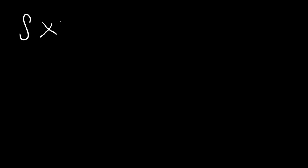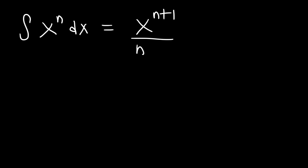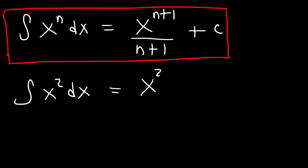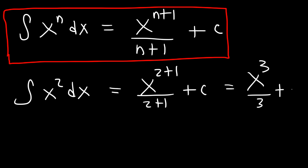Another rule you need to be familiar with is the power rule. Let me give you some examples. If we wish to find the antiderivative of x squared dx, this is going to be x raised to the 2 plus 1, divided by 2 plus 1, plus c. So it's x cubed over 3 plus c, which you could write as one-third x cubed plus c.